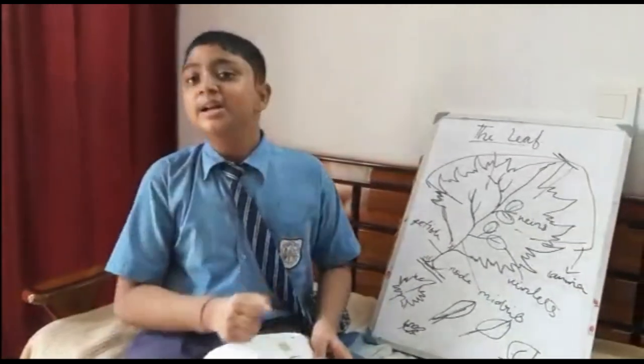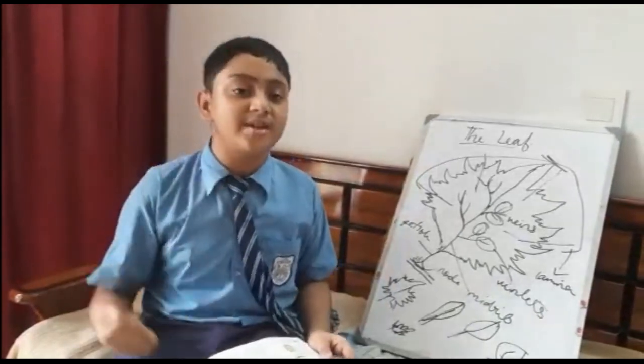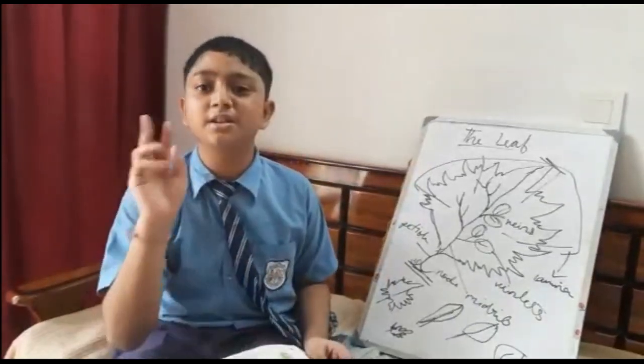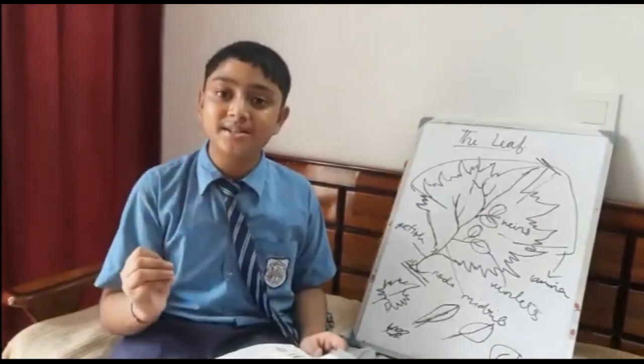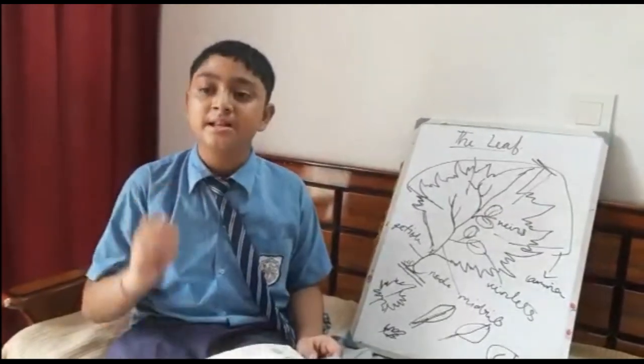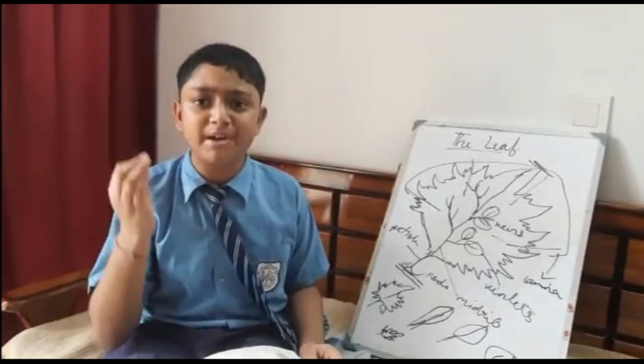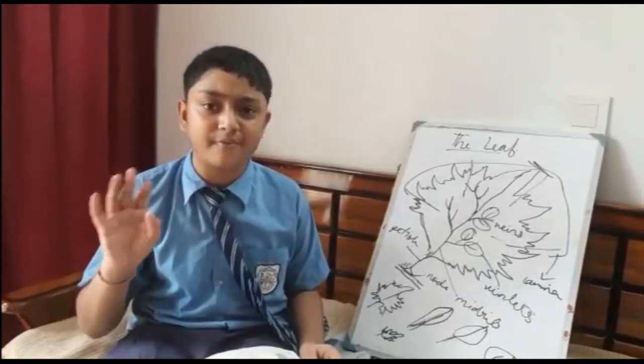Today we end till here. Let's have a recap of what we have learned today. We have learned the two main parts of our plant: the shoot system and the root system. The shoot system consists of stem, branches, leaves, flowers, and fruits.